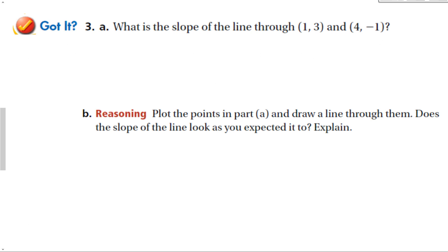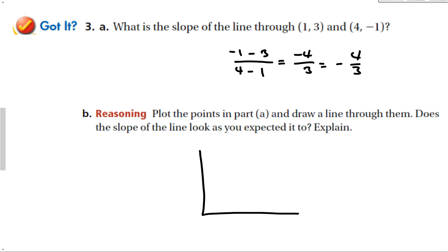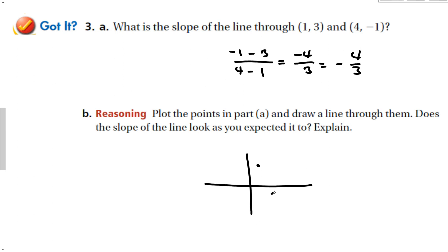Slope of the line through (1, 3) and (4, −1): using y₂ minus y₁ over x₂ minus x₁ gives negative 4 over positive 3, which is negative 4/3. If you plot these two points — right 1, up 3, and right 4, down 1 — you get a graph going down, and you can count down 4, right 3 to confirm the slope.